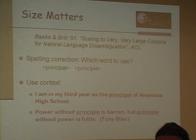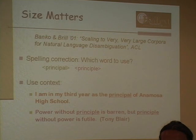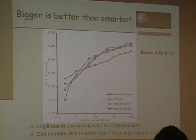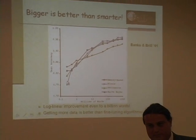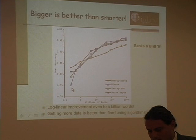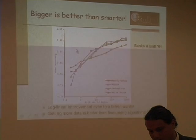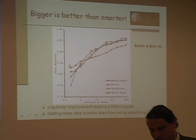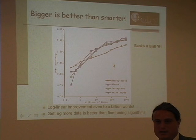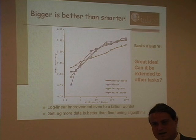The main idea from that paper is that it's better to get more training data rather than fine-tuning your algorithm. The worst algorithm with more data outperforms the best algorithm with less. There's not much difference between different algorithms when you scale the data. Essentially, more data gives you a better algorithm — at least for this particular task.